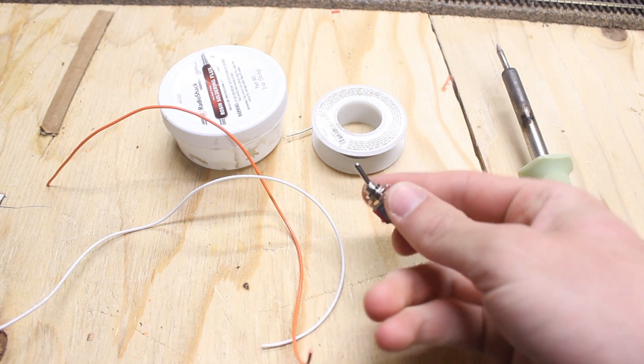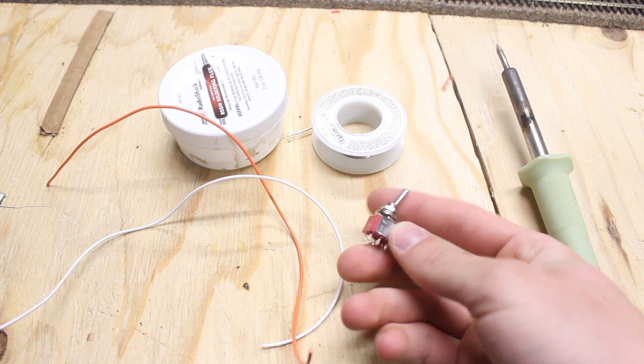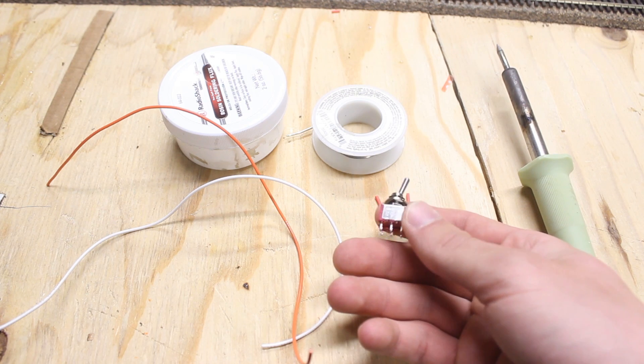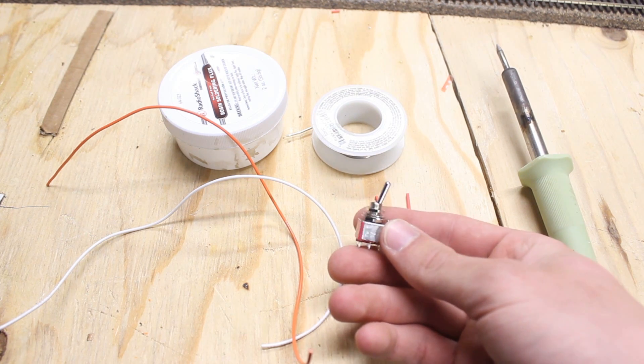Right here I have a double pole double throw switch. We're going to wire it with a main bus wire for the power and then wires coming off of this to go to the switch machine.